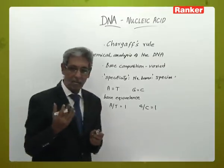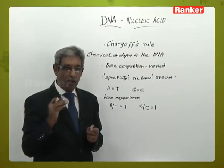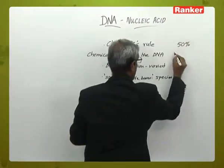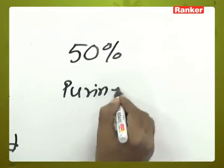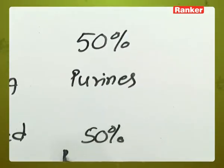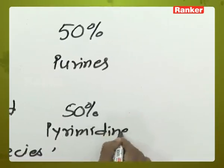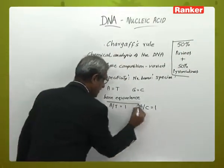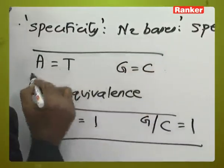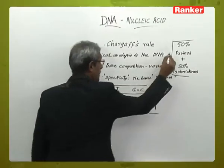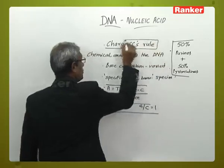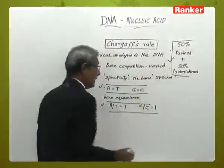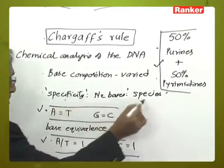When Chargaff hydrolyzed the DNA and quantified purines and pyrimidines, he always found that 50% of the bases are purines and 50% are pyrimidines. This can be expressed as: A = T, G = C, and (A+G)/(T+C) = 1. There could be multiple formats in which Chargaff's rule may be asked in an objective question — three important phrases: A equals T, G equals C, and purine residues equal pyrimidine residues.